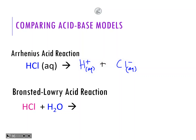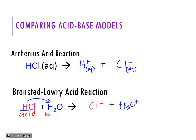In the Bronsted-Lowry reaction, you'll also see that water is a component of the reactants, and you have to show that H is transferring - being donated and being accepted. Following the Bronsted-Lowry definition, the H here will donate to the water. So we end up getting chloride on one side, and then hydronium over here. Chloride is the conjugate base, and hydronium is the conjugate acid.